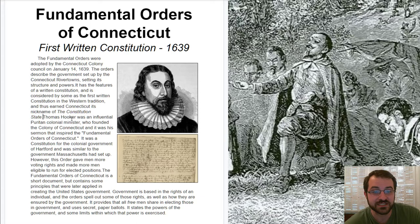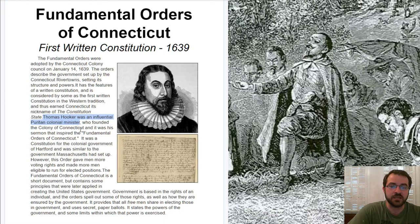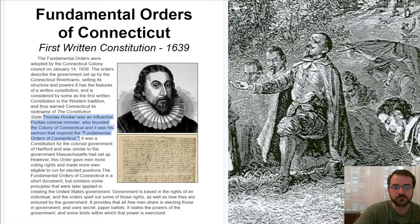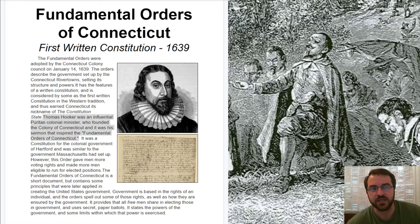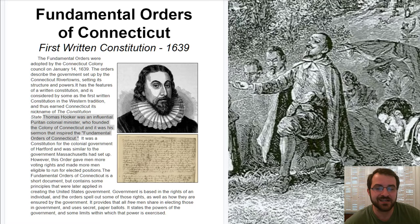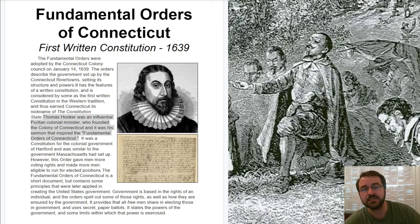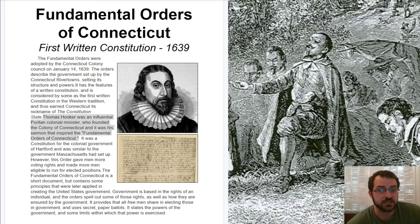Thomas Hooker was an influential Puritan colonial minister who founded the Colony of Connecticut. It was his sermon that inspired the Fundamental Orders of Connecticut. In 1636, Thomas Hooker left Massachusetts Bay and led about 100 people to the Connecticut River. He had originally come over as part of the Massachusetts colony, but he decided it wasn't working out and chose to start fresh somewhere else.